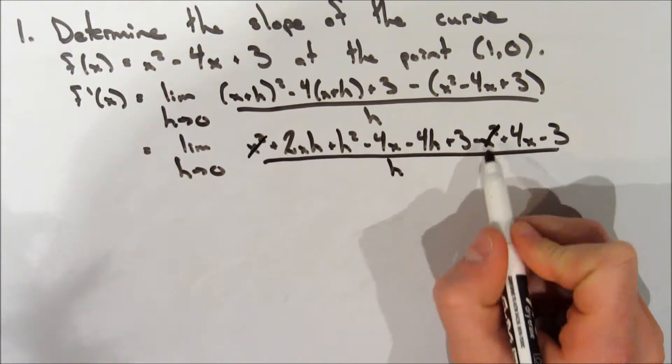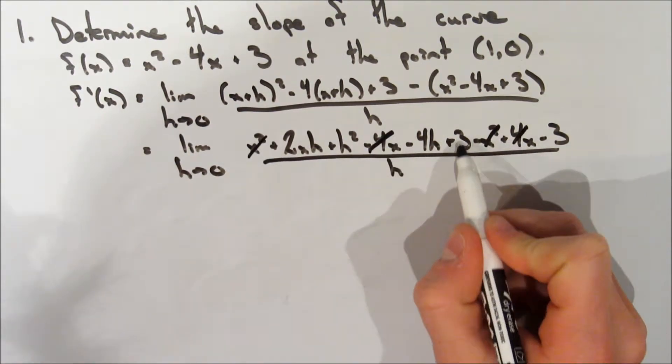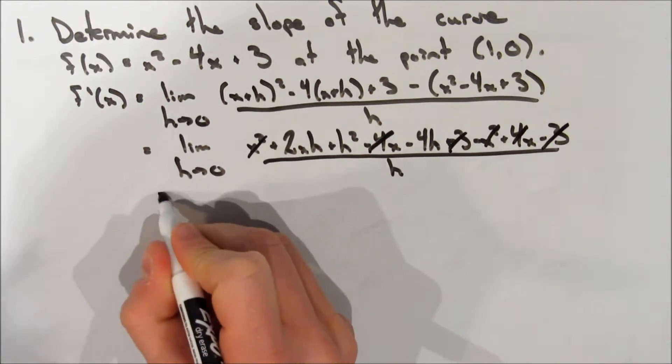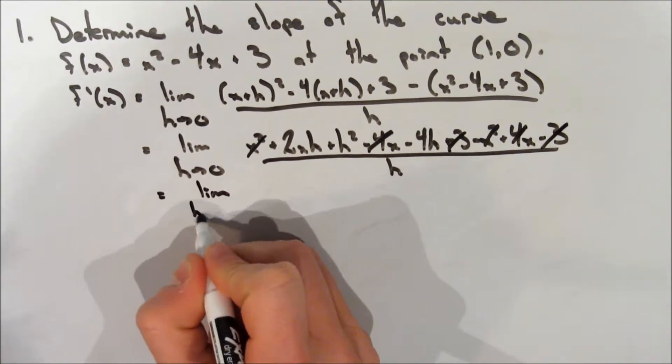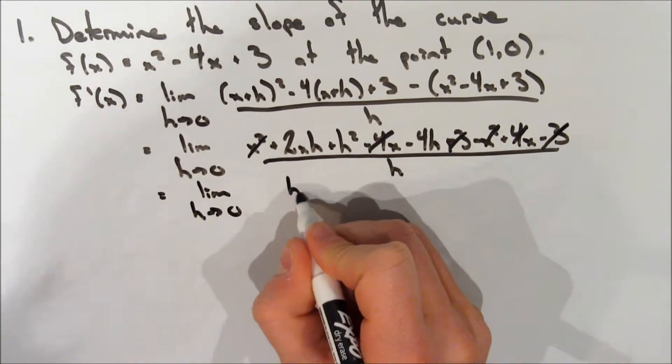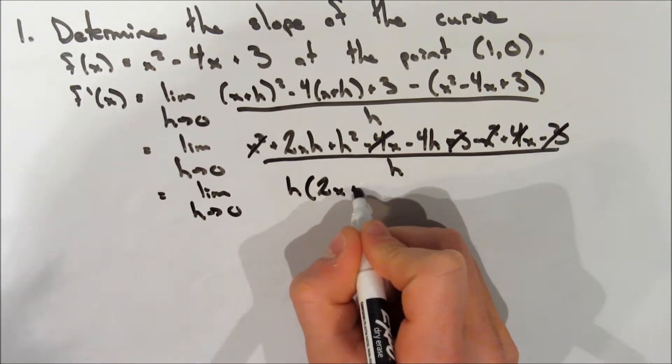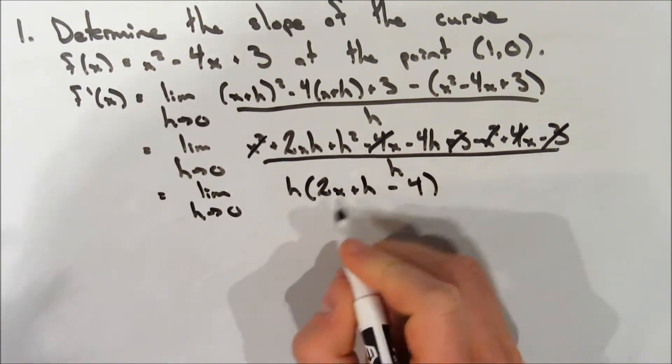So now there's some common terms, so let's cross those out, the x squareds, the 4x's, and the 3's. And so now we're left with all terms with the h in it. So let's factor those out, and then we'll be able to divide the numerator and the denominator by h.